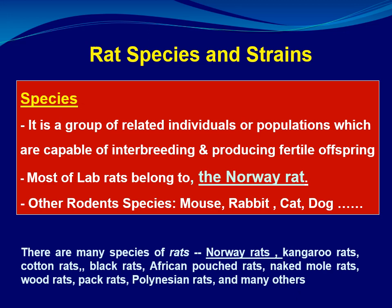Rat species and strains: a species is a group of related individuals or populations which are capable of interbreeding and producing fertile offspring. Most lab rats belong to the Norway rat species. Other rodent species include mouse, rabbit, cat, and dog. There are many other rat species besides Norway rats, such as kangaroo rats, black rats, and cotton rats, but lab rats are mostly taken from Norway rats.